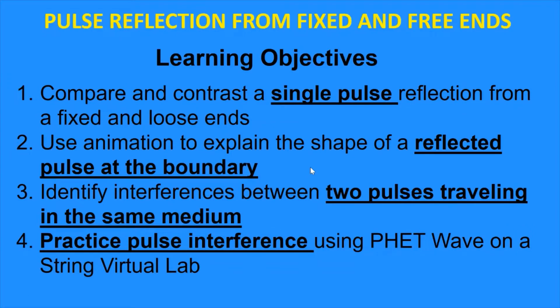This lesson is about pulse reflection from fixed and free ends. The learning objectives are: compare and contrast a single pulse reflection from fixed and loose ends; use animation to explain the shape of a reflected pulse at the boundary; identify interferences between two pulses traveling in the same medium; and practice pulse interference using the PHET wave on a string virtual lab.